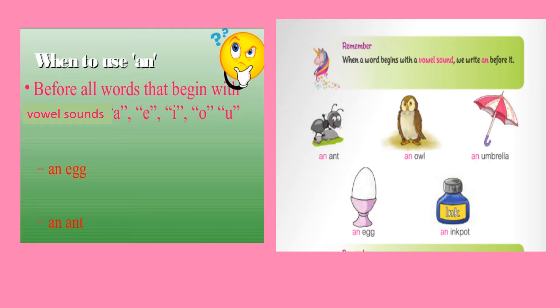Look at the examples: an egg, an ant. The words 'egg' and 'ant' are starting with the vowel sounds E and A. An owl — the word 'owl' is starting with the vowel sound O. An ink pot — the word 'ink pot' is starting with the vowel sound I. That is why we are using 'an' before them.